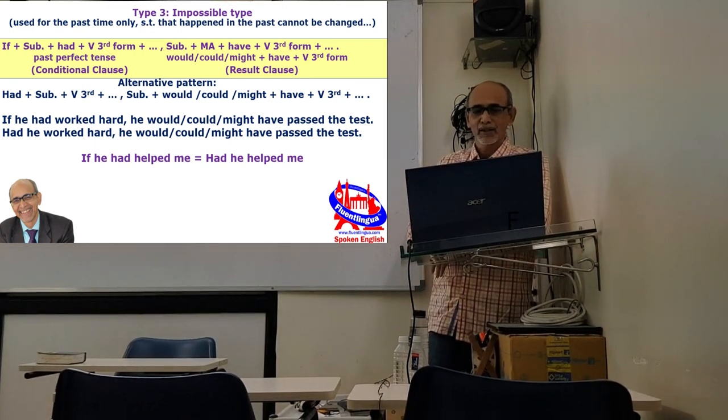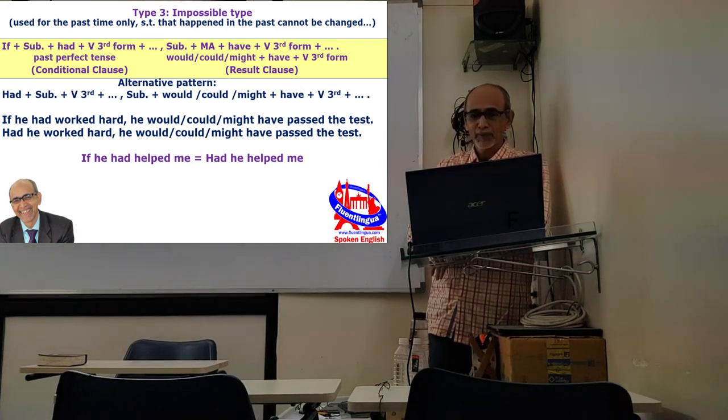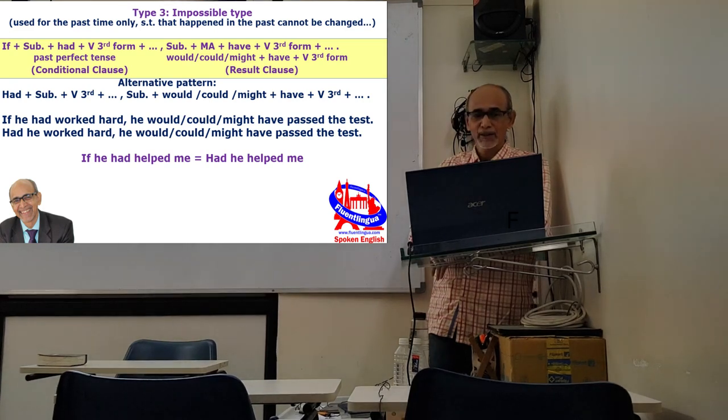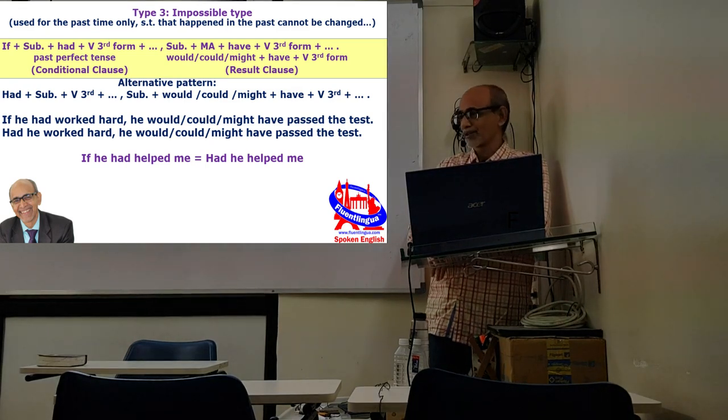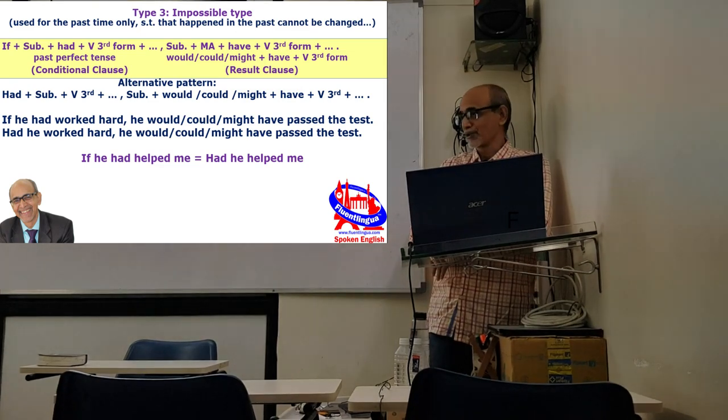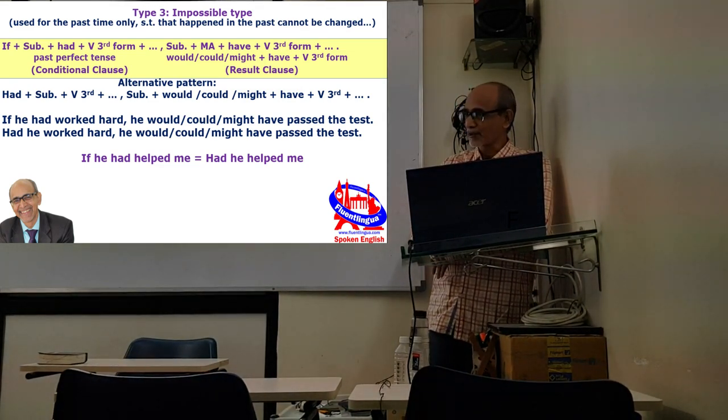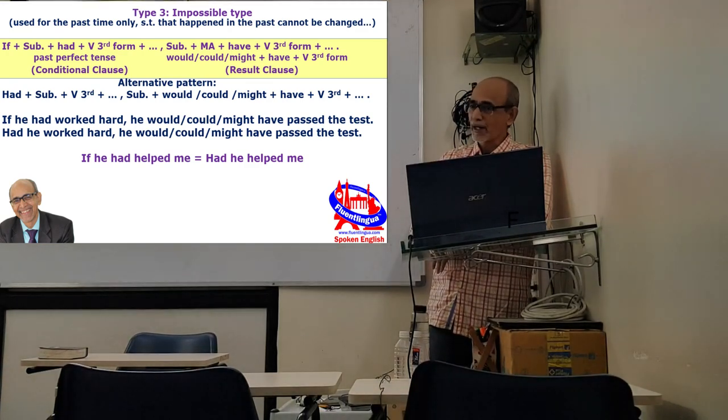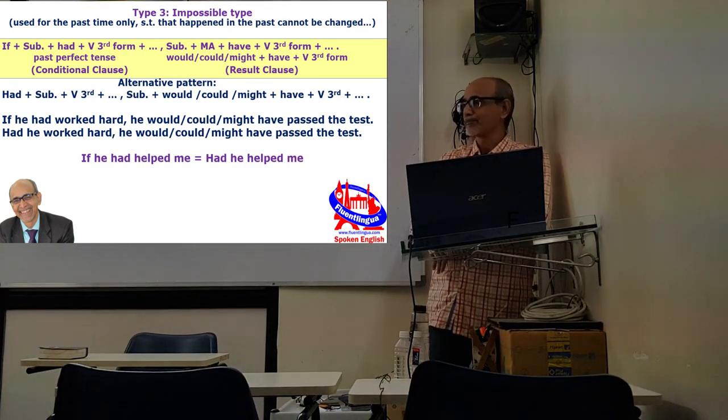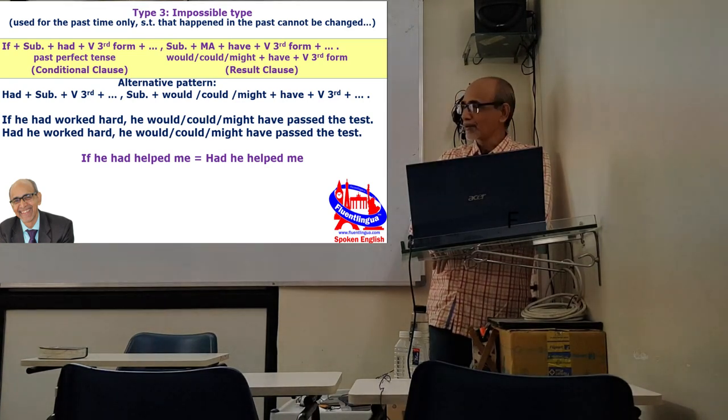This third pattern has an alternative pattern as well. In formal writing, many people, they do not use if, and to do the work of if they bring this had in the beginning. They say had he worked hard, he would have passed. If he had helped me, I would have been in a better position, that means had he helped me, I would have been in a better position. If he had or had he, these are the two alternative patterns.